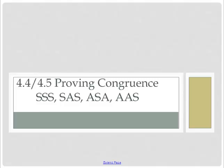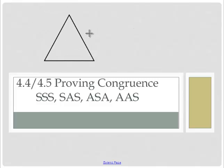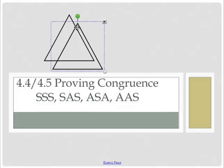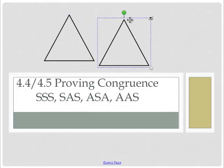We're going to start sections 4.4 and 4.5, and we're going to piece these together because they really do the same thing. We're going to prove that triangles are congruent. Remember, two congruent triangles — what was special about them was that when I drew one, every piece of it was exactly the same.